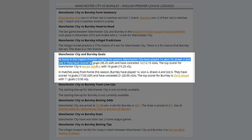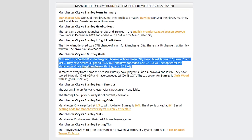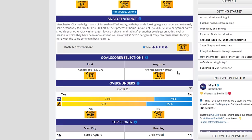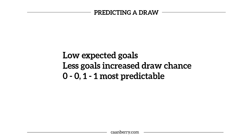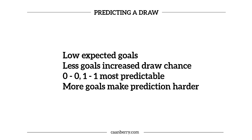InfoGoal is a site I would recommend for statistics and data — they've got a decent app with an xG feature which is great to pull up once the game is on. What you need to look for is low expected goals, because the lower the expected goals, the higher the chance of a draw. Nil-nil and one-nil are often the most reliable drawing scorelines, because the more goals there are, the harder it becomes to predict a draw — predicting a 3-3 draw, for example, is very, very hard.